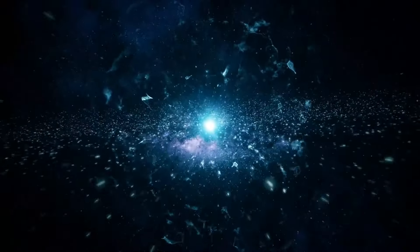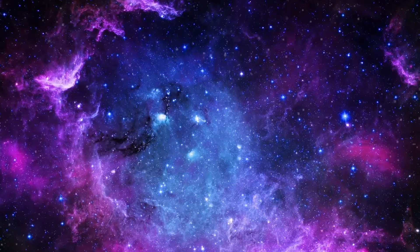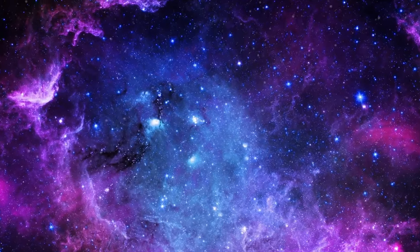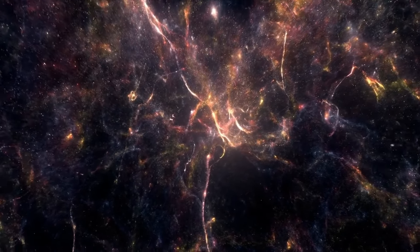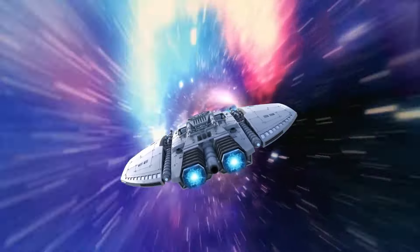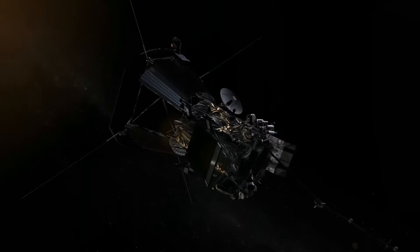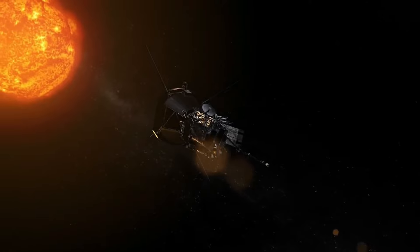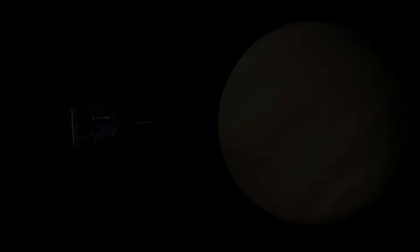So, what existed before the Big Bang? According to the vacuum fluctuation model, it could have been a quantum vacuum, a collection of transient particles and antiparticles. Our universe might have been just one chance bubble that grew into something more significant. While the vacuum fluctuation model poses intriguing possibilities, it also presents challenging questions. For instance, why did a specific bubble expand while others didn't?